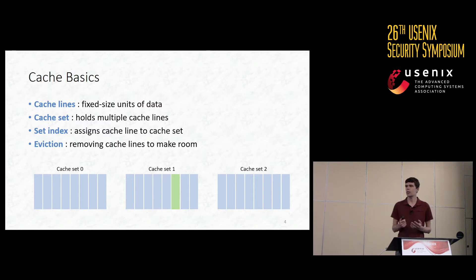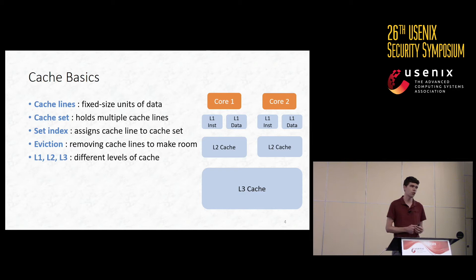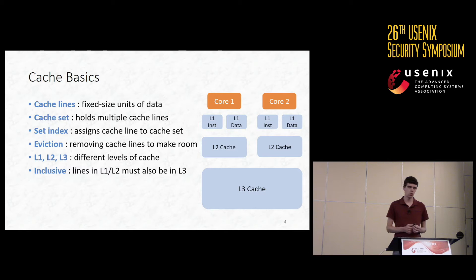When a new line comes into the cache, some existing line in that line's cache set has to be removed to make room, and this is called eviction. In our example, if a new line comes in needing to be in cache set 1, some existing line in cache set 1 must be evicted. Modern processors have many levels of cache, from the small and fast L1 to the large but comparatively slower L3. Typically, the L3 cache is the only one that is shared across cores, which means that any cross-core cache attack must necessarily target the L3 cache. In recent Intel processors, the L3 cache is inclusive, which means that any line held in the L1 or L2 cache must also be held in the L3 cache. This property is key to enabling cross-core cache attacks, and basically all existing cross-core cache attacks rely on this property of inclusivity.